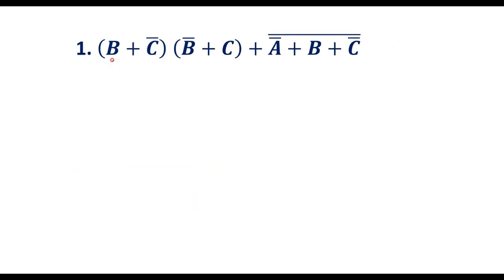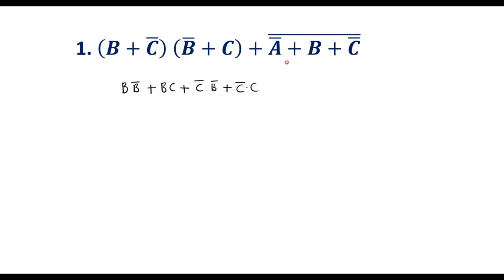So here we have (b + c̄)(b̄ + c). Let me multiply this term with this term. I can write b·b̄, that is bb̄, plus b·c, that is bc, plus c̄·b̄, and plus c̄·c.